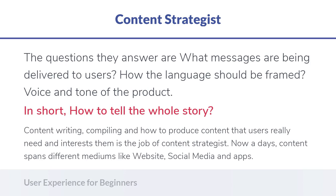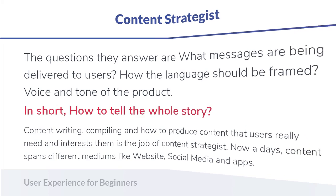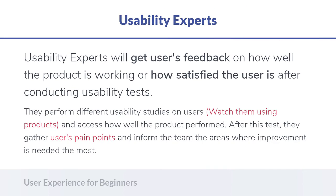How are you going to tell that story? Will you use less text and more images, detailed text with fewer images, or an introductory video — including the script for that video? Content strategy also involves all the content writing and compiling, determining whether the content is actually needed by users, and whether users really need to download a particular PDF file.